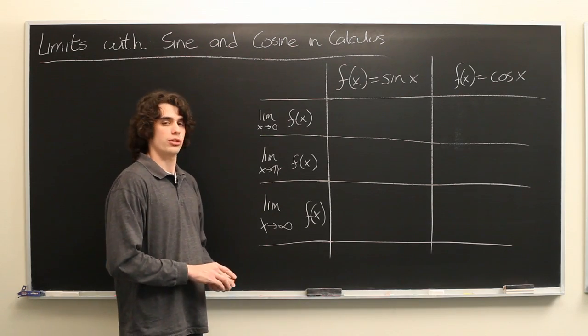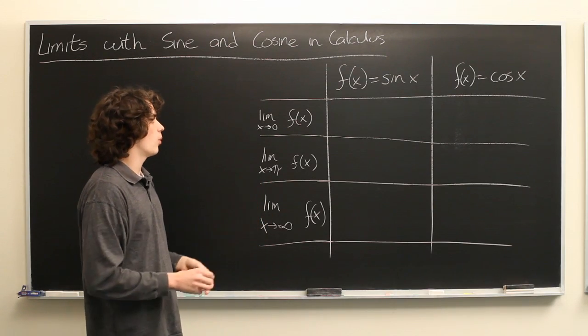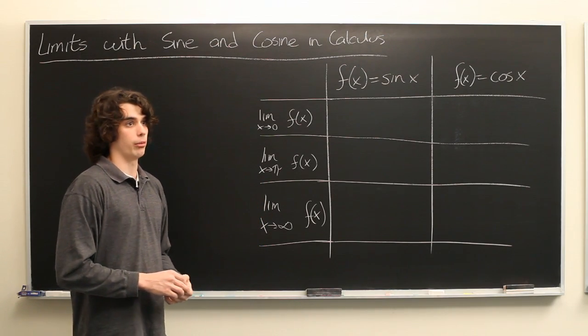But that's not the case for sine and cosine. They are so-called well-behaved functions. They're continuous and well-defined everywhere on the real number line.